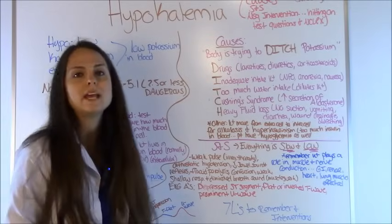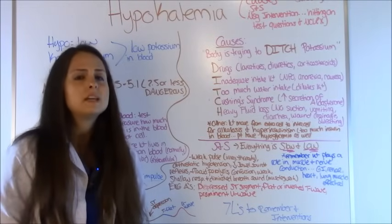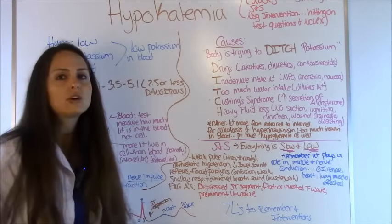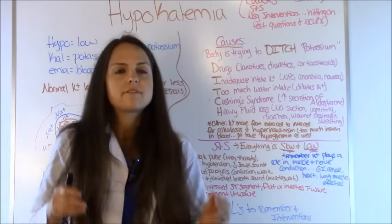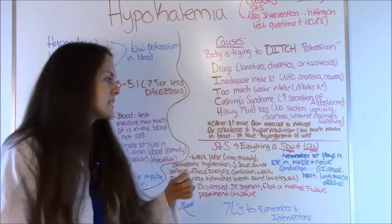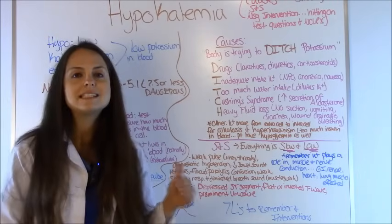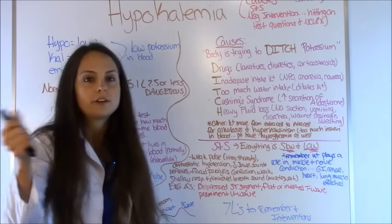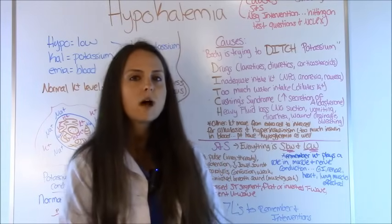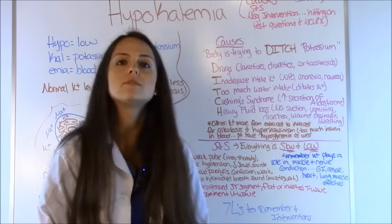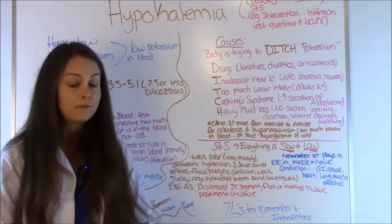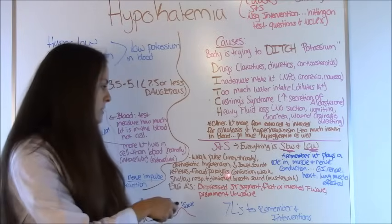So what you're going to see is a weak pulse that is going to be irregular and thready. Orthostatic hypotension. Decreased bowel sounds — remember, everything's just moving really slow, so the bowels aren't going to be moving and you're not going to be hearing those bowel sounds with your stethoscope. Decreased deep tendon reflexes, because when you're hitting the reflexes with your little hammer, they're not going to respond as well — low potassium is responsible for muscle contraction. Flaccid paralysis happens late with really low potassium, and you could also see confusion.